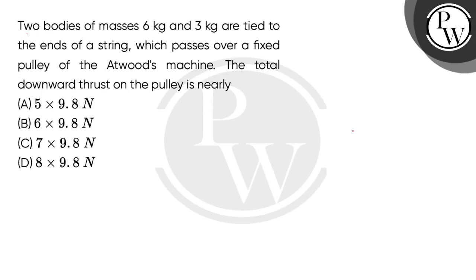Let's read the question. Two bodies of masses 6 kg and 3 kg are tied to the ends of a string which passes over a fixed pulley of the Atwoods machine. The total downward thrust on the pulley is nearly.